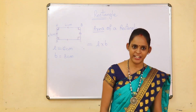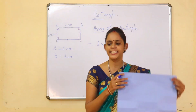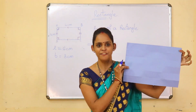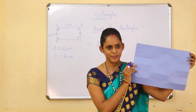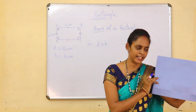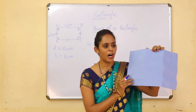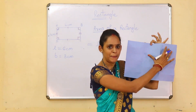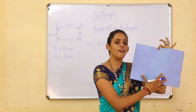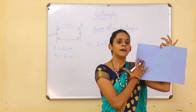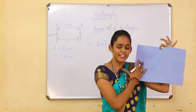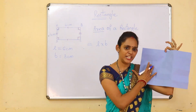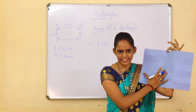Now let's see the area of rectangle. This is a figure of rectangle; this is the object of a rectangle. The internal space of a figure is known as the area of rectangle.